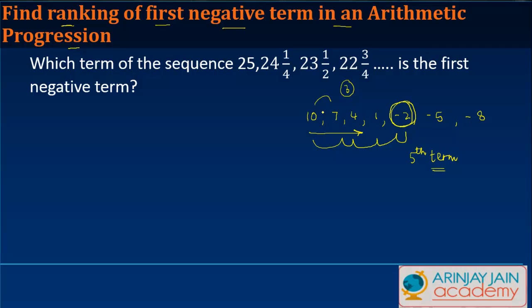But what if I tell you, can you find out the first negative term of a given arithmetic progression where certain data is given to you? So let's say you have a question: which term of the sequence 25, 24¼, 23½, 22¾ is the first negative term?